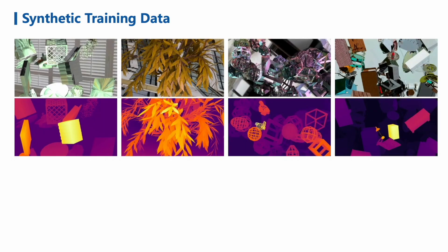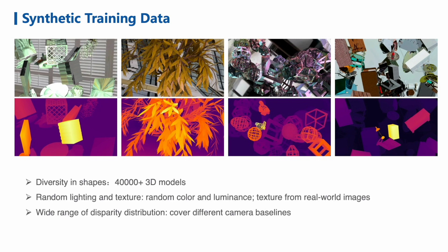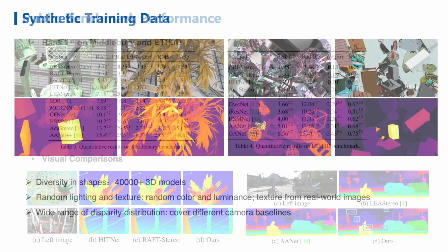Compared to previous synthetic datasets, our dataset devotes extra attention to challenging cases in real-world scenes. We collect over 40,000 3D models of objects with various shapes as the basic source content with textures from real-world as the surface, and we place different types of lights with random color and luminance at random positions. Furthermore, to cover different baseline settings, we ensure the disparities distribute smoothly within a wide range.